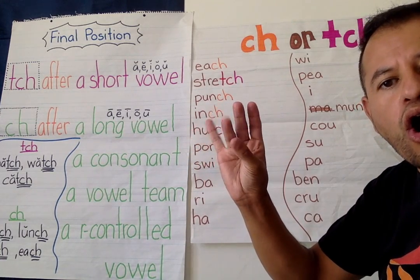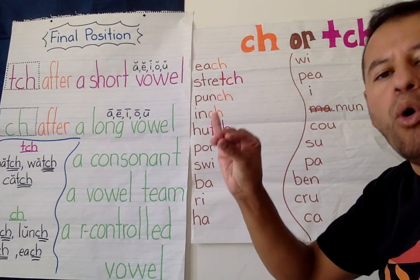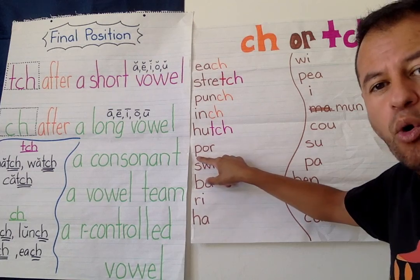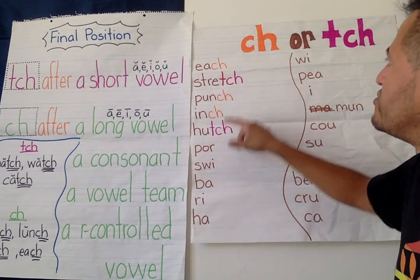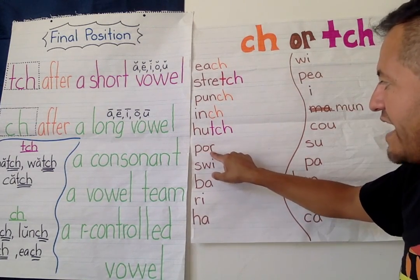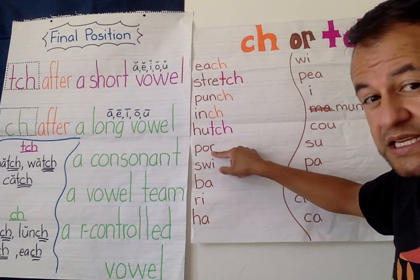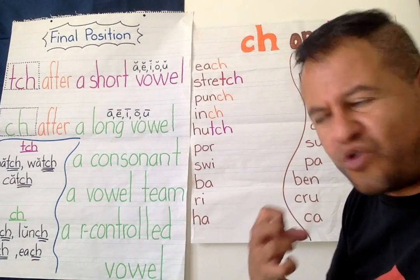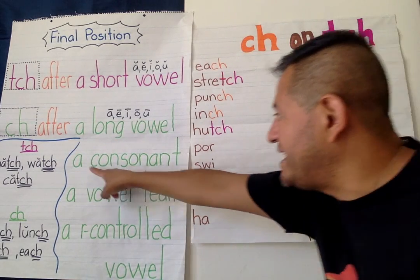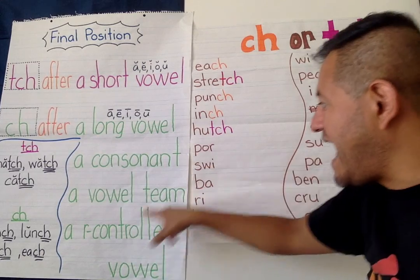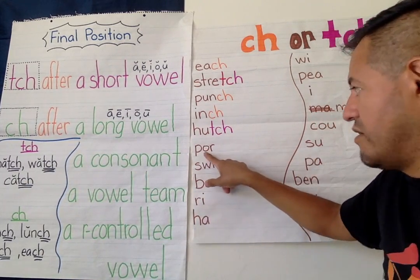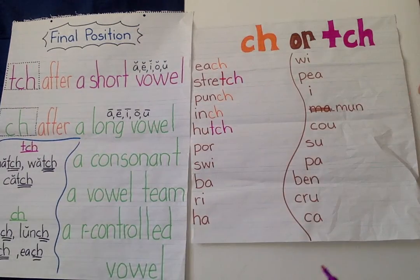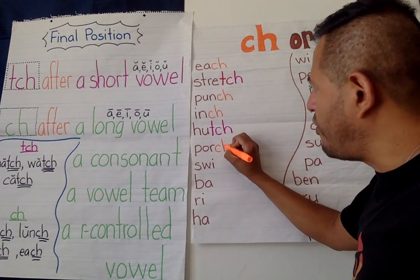P-O-R — "porch." I see the smaller word O-R. It's got an R, which is a consonant, but it's also got an O, which makes it O-R — an R-controlled vowel, a bossy R. So it is a consonant R and it's an R-controlled vowel O-R. They're both going to be green — green tells me to look for C-H. "Porch," like a front porch.